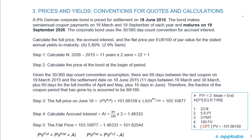Now we'll work through an example calculating the flat price. It is a 6% German corporate bond priced for settlement on the 18th of June 2015. The bond makes semi-annual coupon payments on the 19th of March and 19th of September each year and matures on the 19th of September 2026. The corporate bond uses the 30/360 day count convention for accrued interest. We'll calculate the full price, accrued interest, and flat price per €100 of par value at a stated annual yield to maturity of 5.8% (or 2.9% semi-annually).